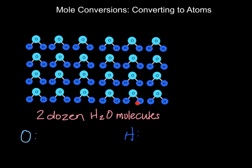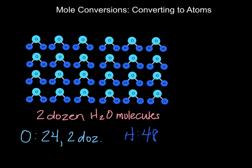Now I've doubled my quantity, so I have two dozen water molecules. When I count up all of my individual oxygen atoms, I notice that I have 24 oxygen atoms, or two dozen oxygen atoms. When I count up all of my hydrogens, I find that I have 48 hydrogen atoms, or four dozen hydrogen atoms. Two times the subscript H₂ gives four, so I have four dozen hydrogens, and two times the subscript one gives me two dozen oxygen atoms.